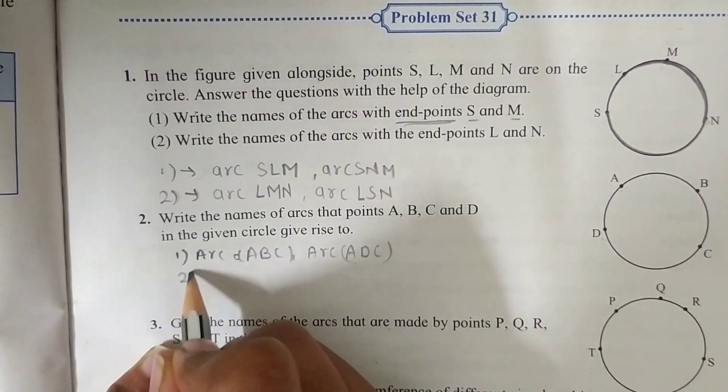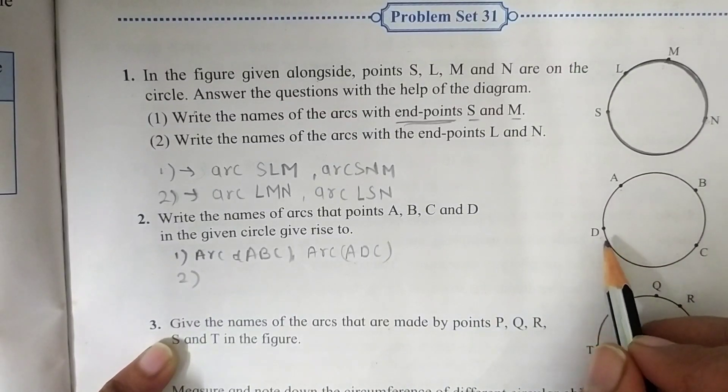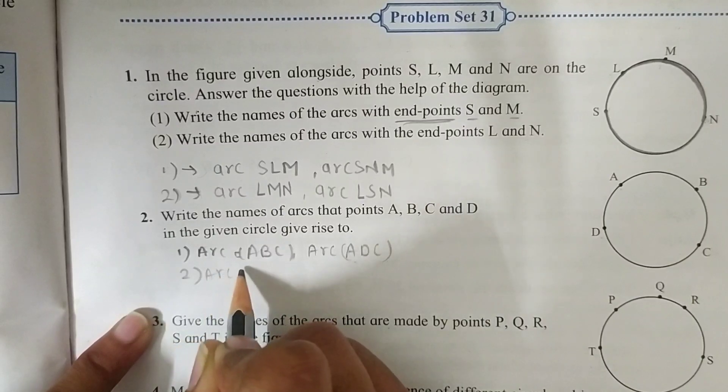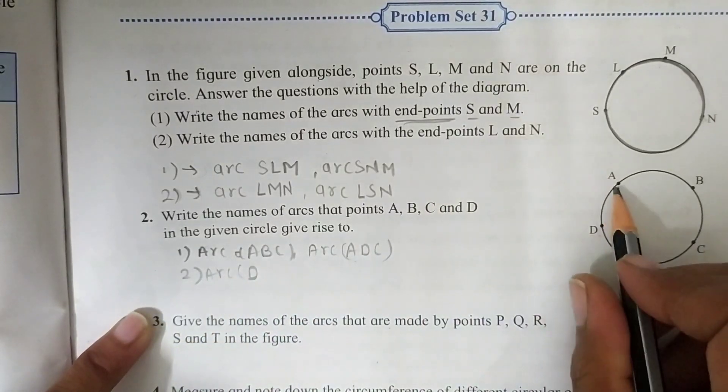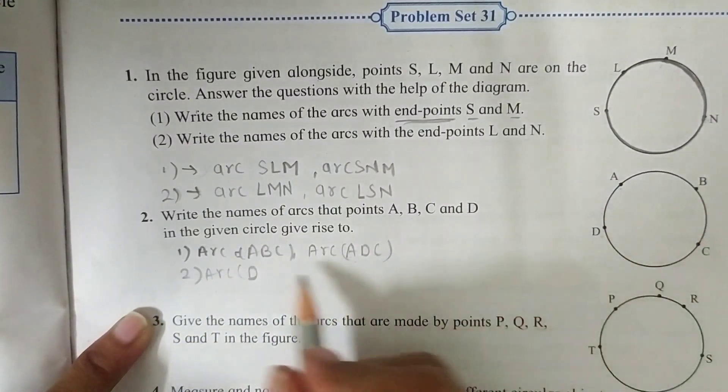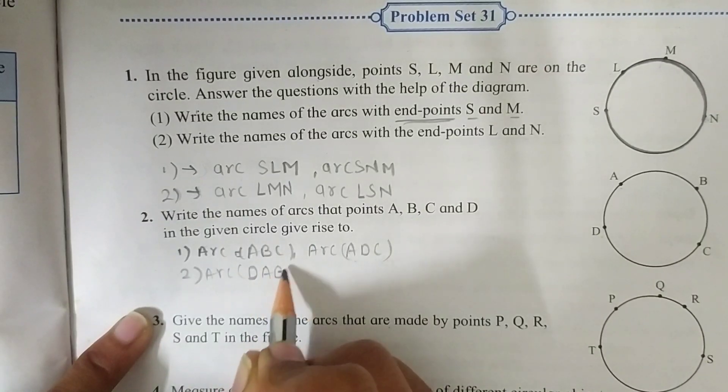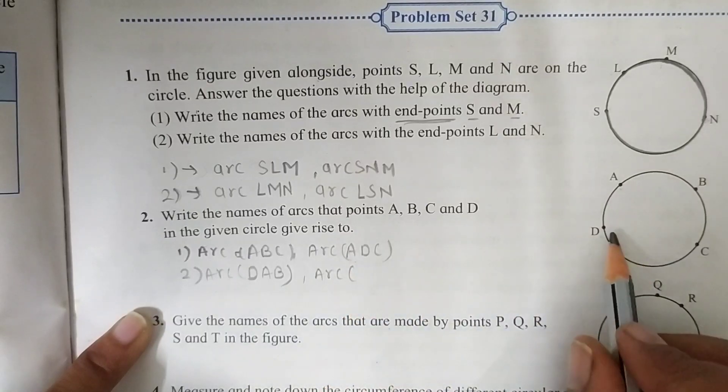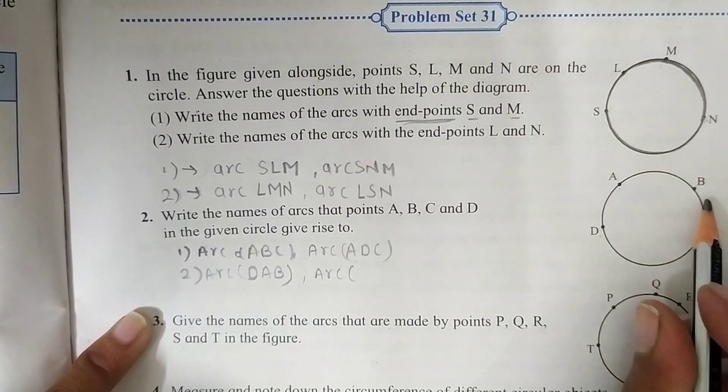Then second one we can write now starting from D. Arc D, A, B. And second arc is arc D, C, B.